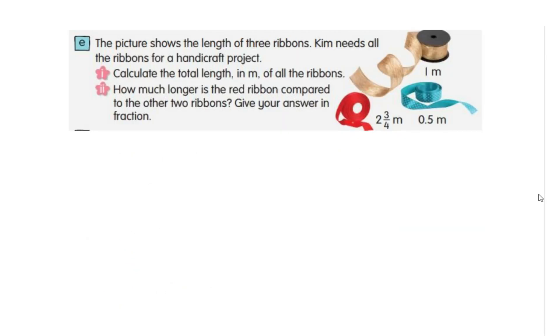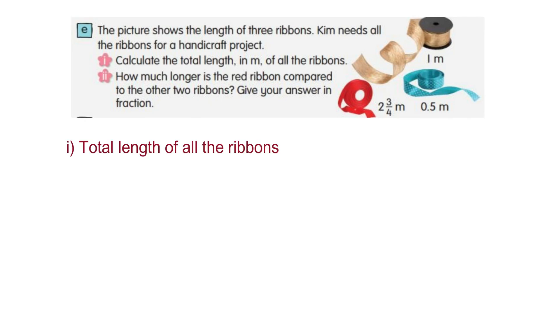The picture shows the length of three ribbons. Kim needs all the ribbons for a handicraft project. Number 1: Calculate the total length in meters of all the ribbons. Total length will be the gold ribbon is 1 meter, plus the blue ribbon 0.5 meters, and plus the red ribbon 2 3/4 meters.